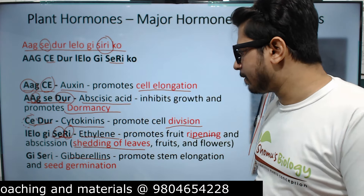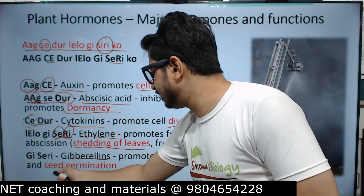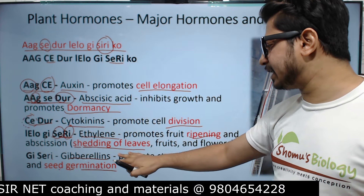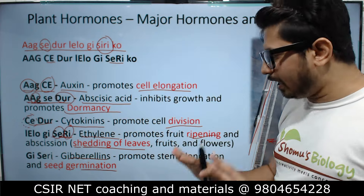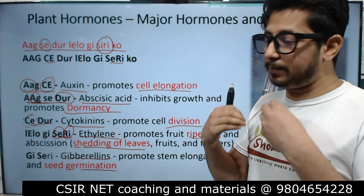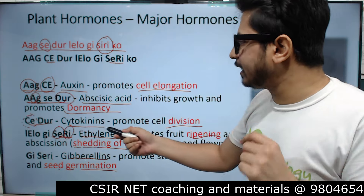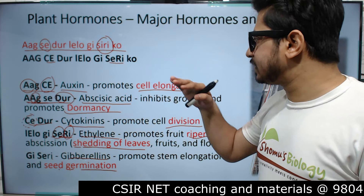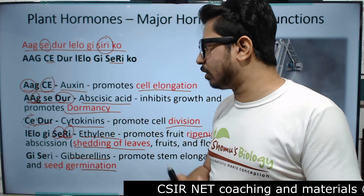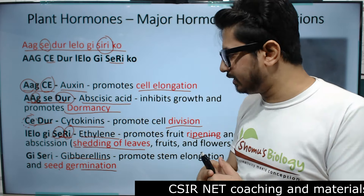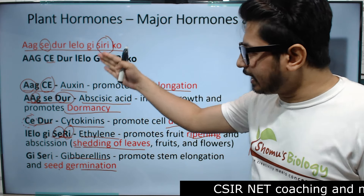'G' is for Gibberellins. Gibberellins promote stem elongation and also help in the process of seed germination. Note that the roles of Gibberellic acid and Abscisic acid are opposite — Abscisic acid causes seed dormancy while Gibberellic acid causes seed germination.